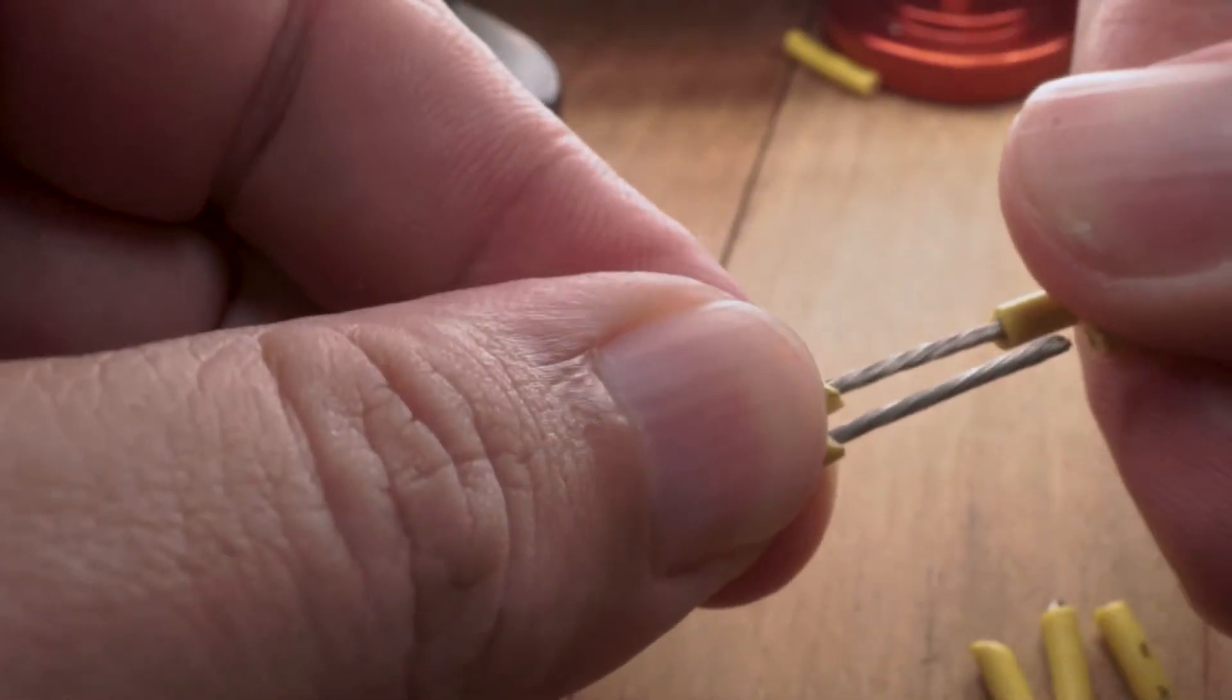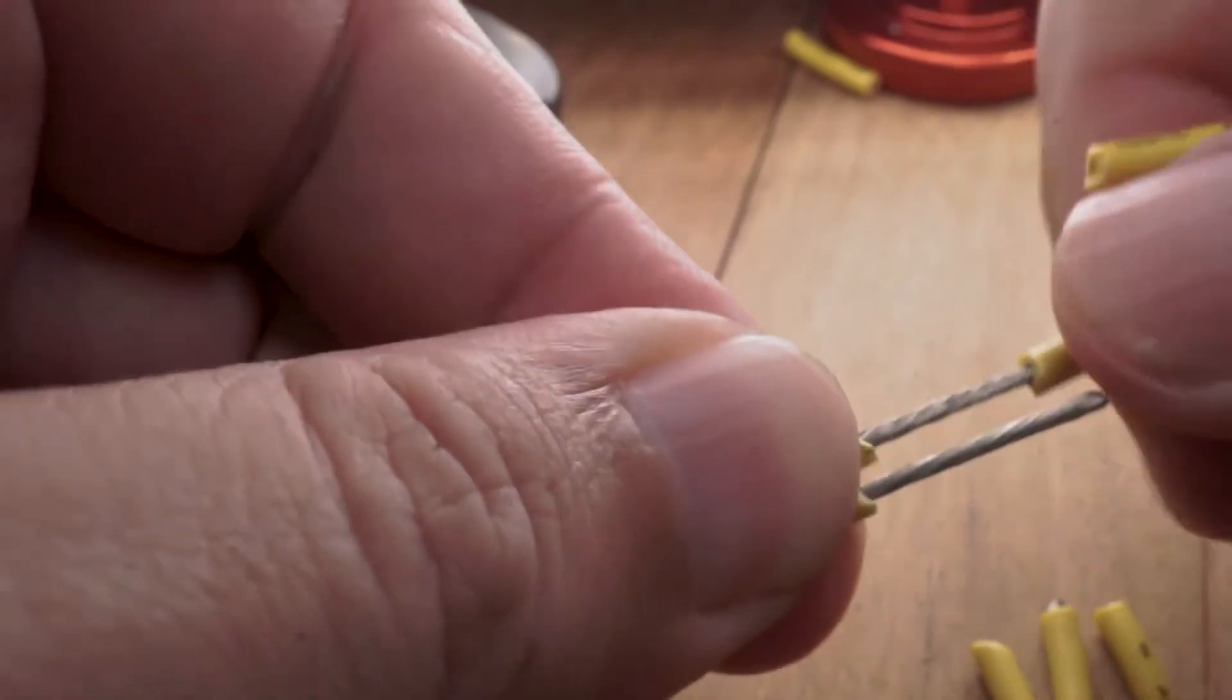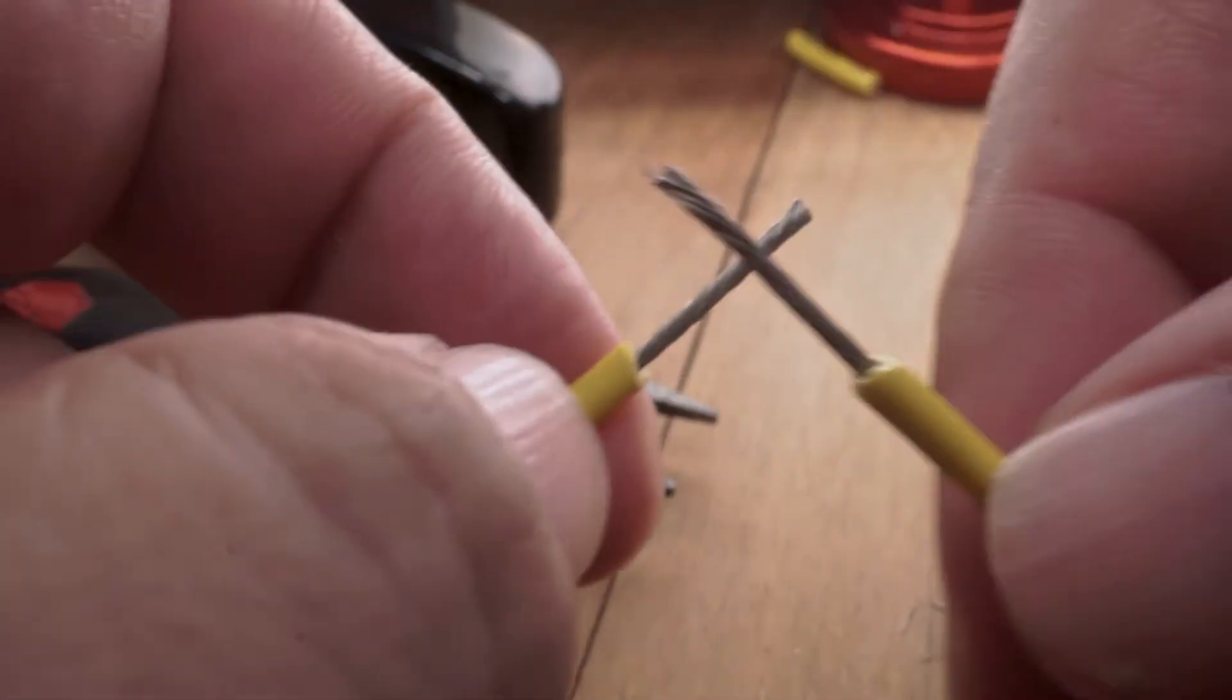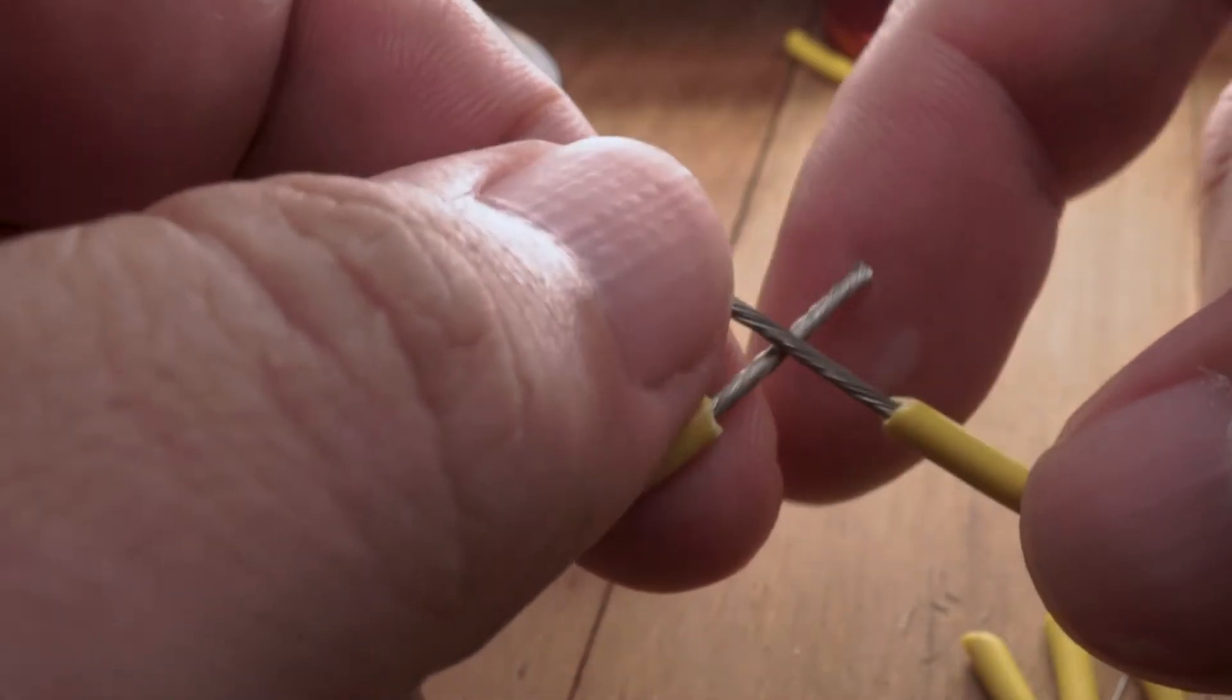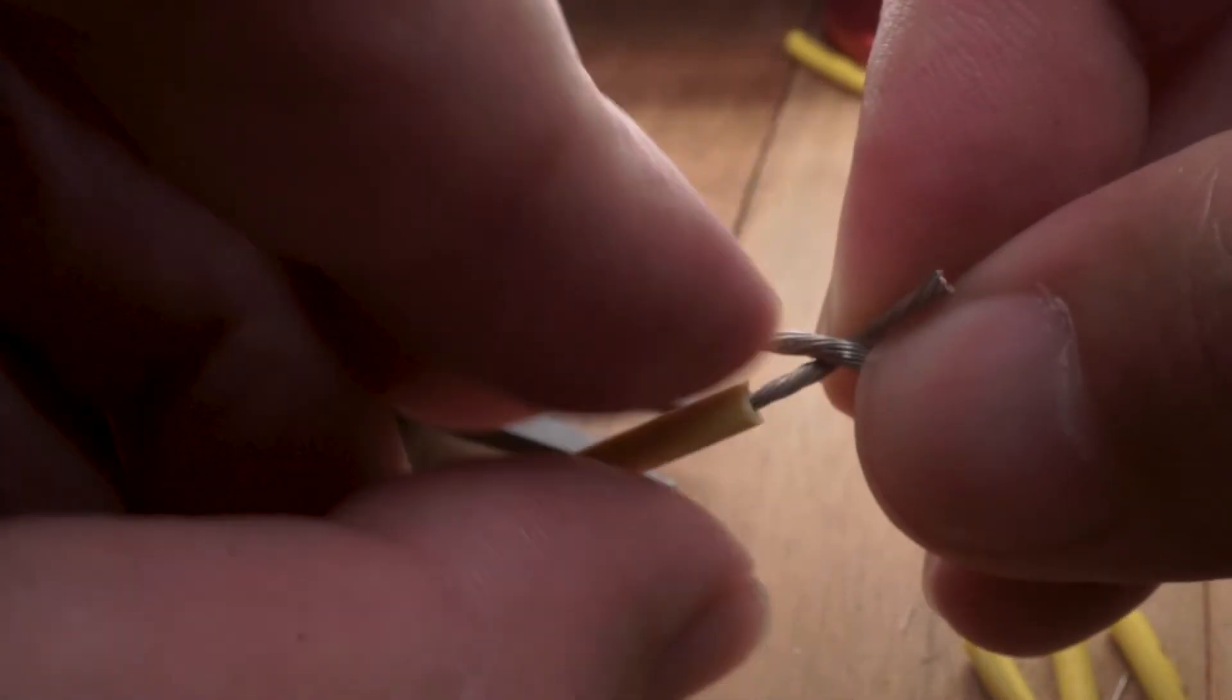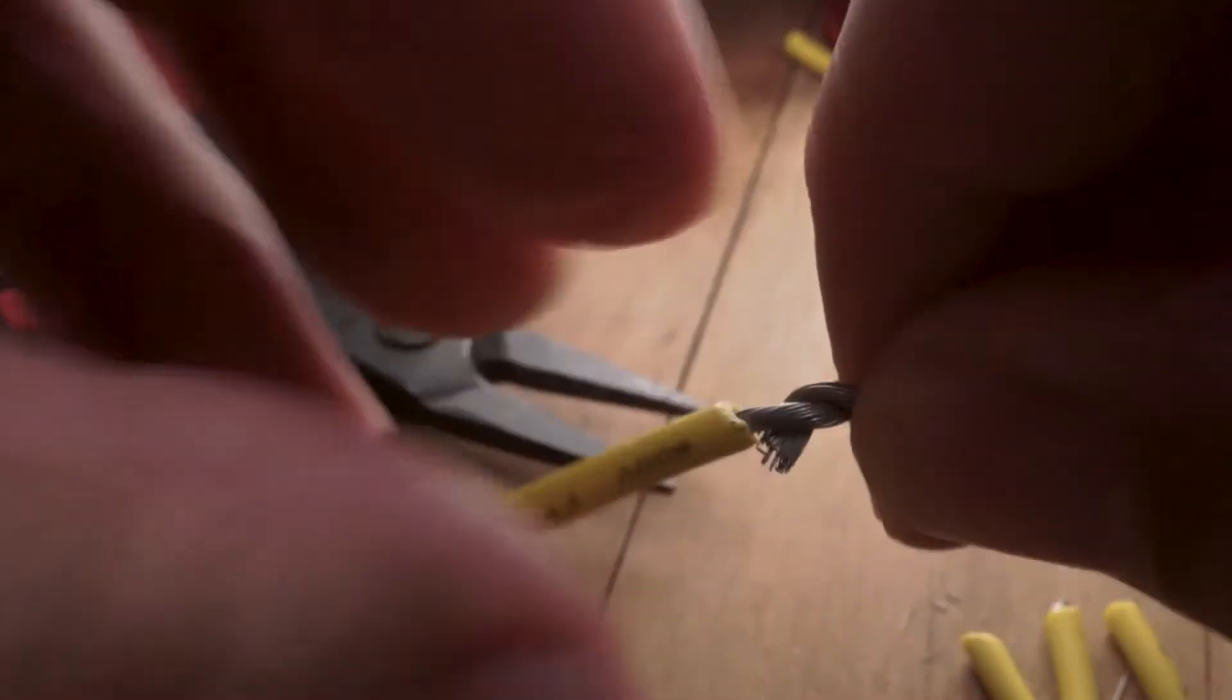Once they're nice and twisted, I am going to make an X and try to make it as even as possible. And you just kind of twist the two wires around each other. You kind of get this nice braid that forms up, just like that.